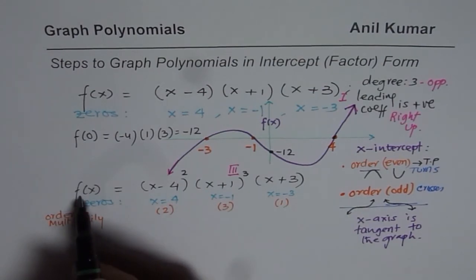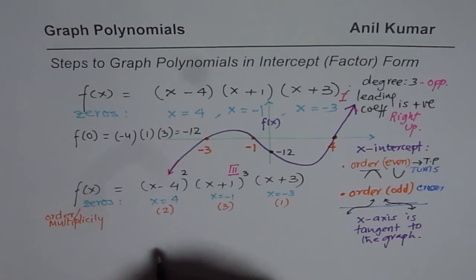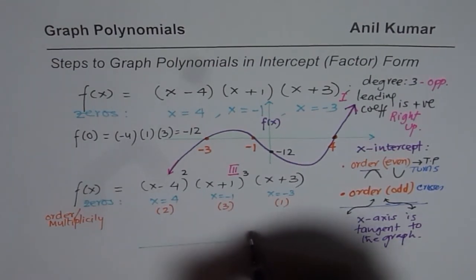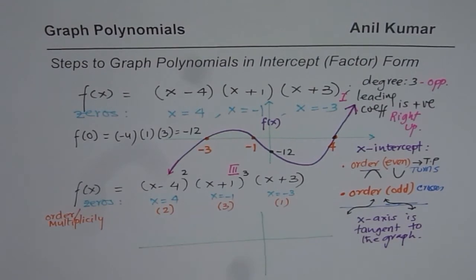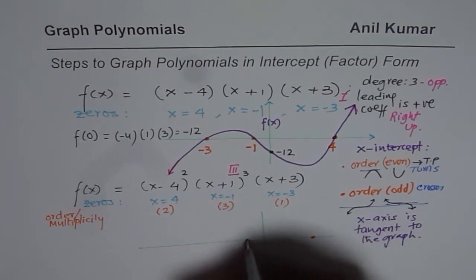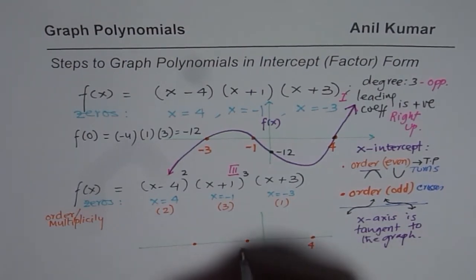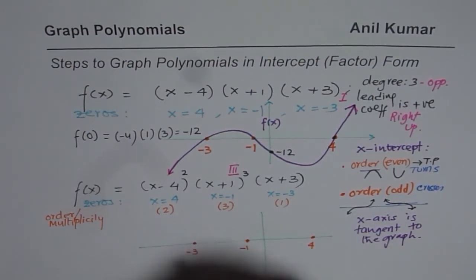So I am again calling it f of x. Anyway, you can always name it f of x. It was better if I could have given it g of x. Anyway, we will sketch it on a different set of coordinates. So we again have three zeros. So we have 0 at 4, minus 1 and minus 3. So we again have three zeros, 4, minus 1 and minus 3. However, the degree has changed.